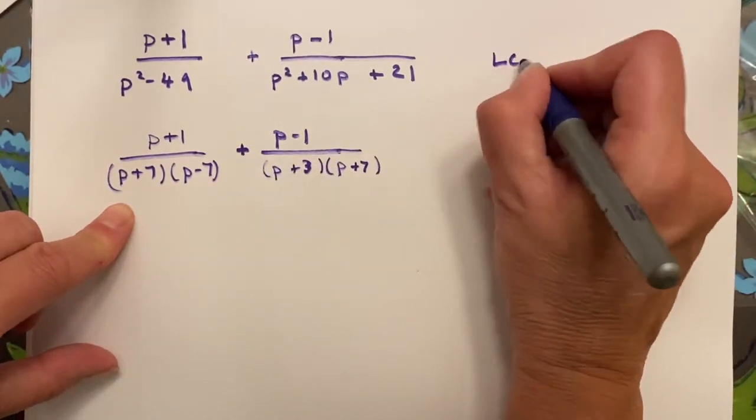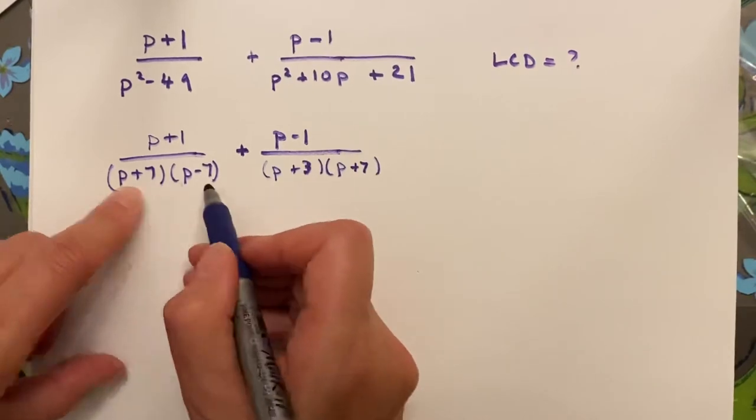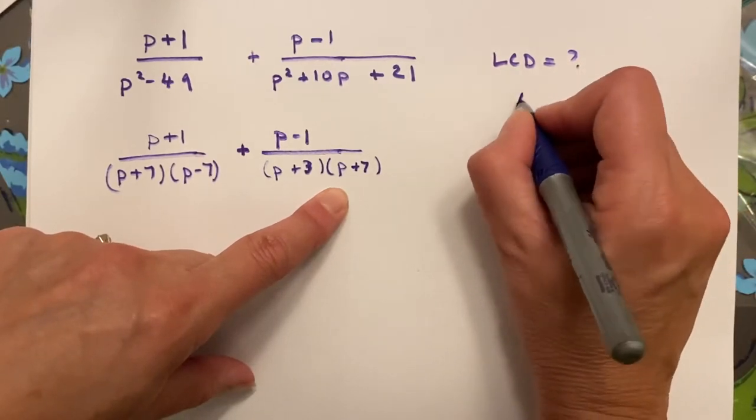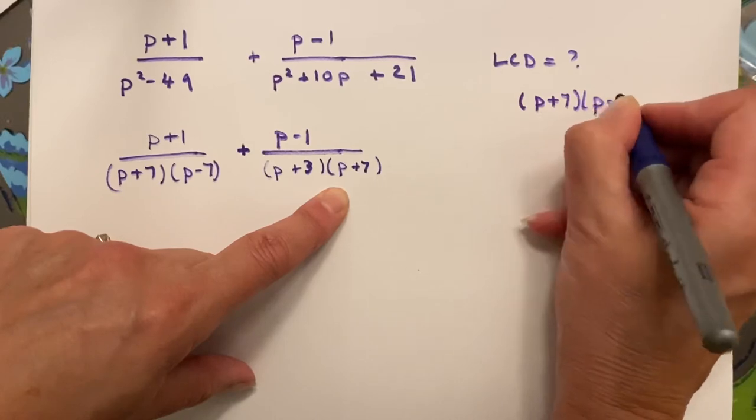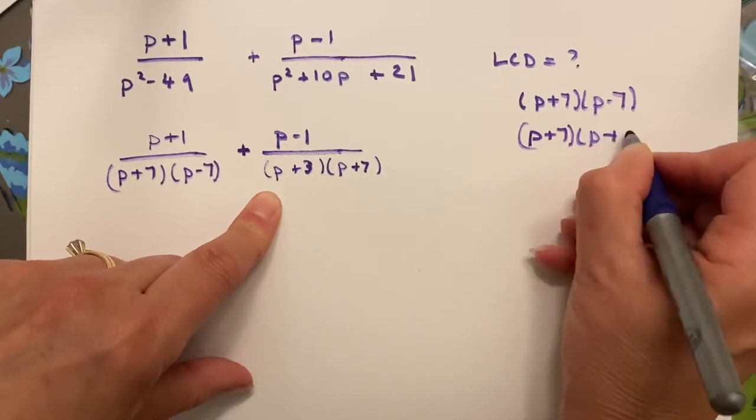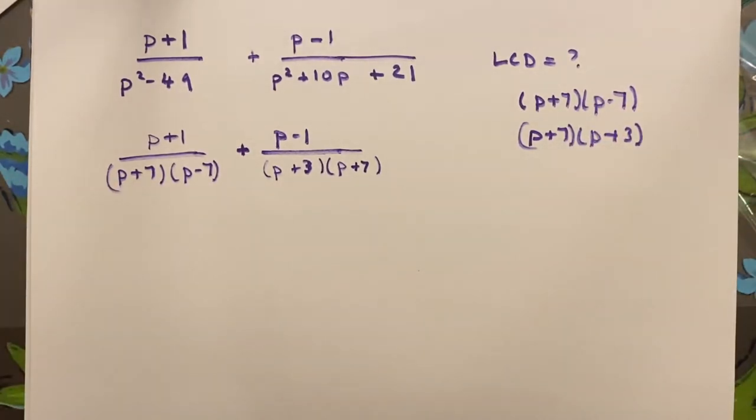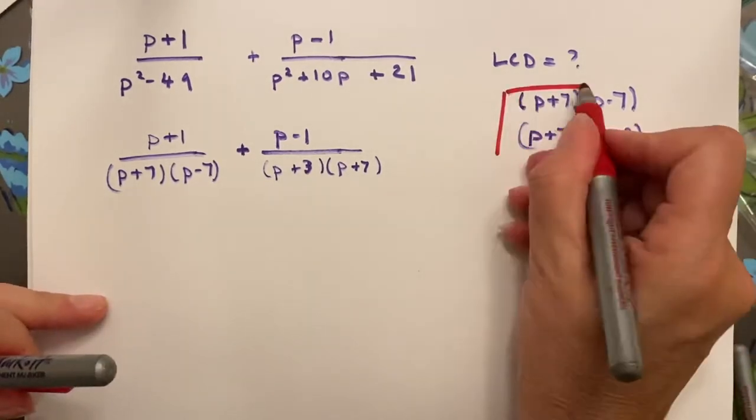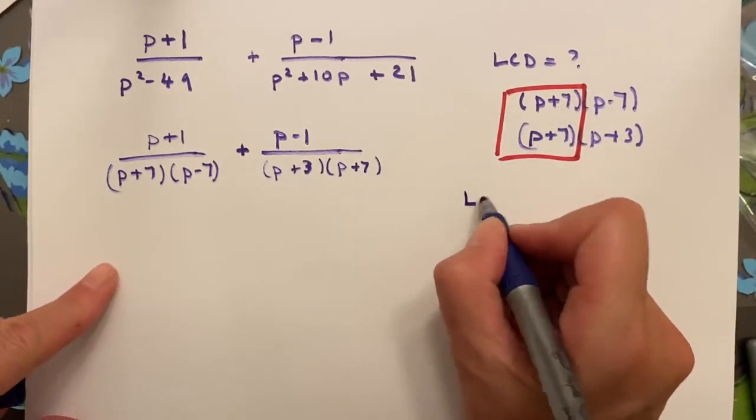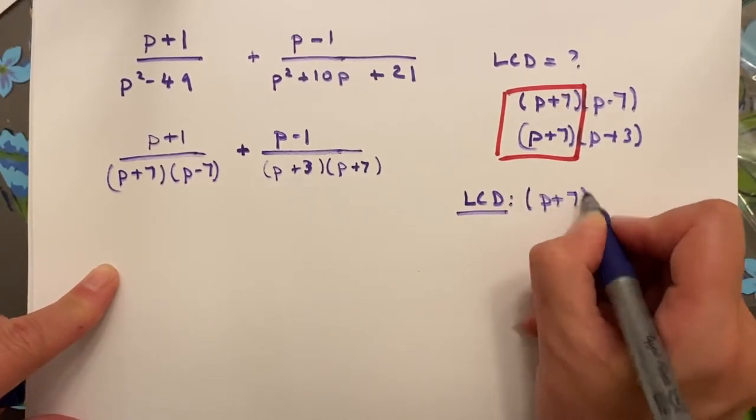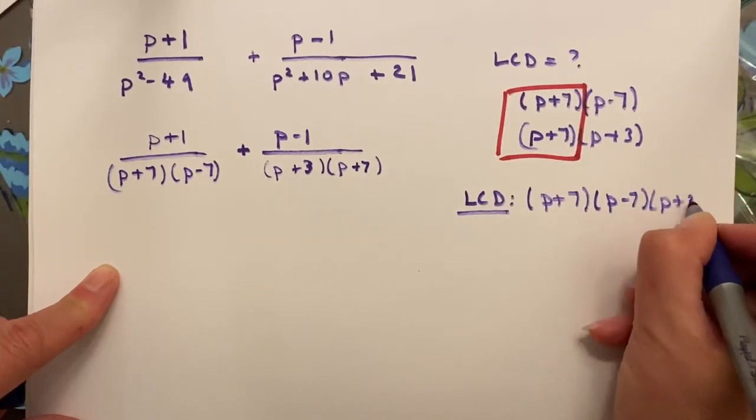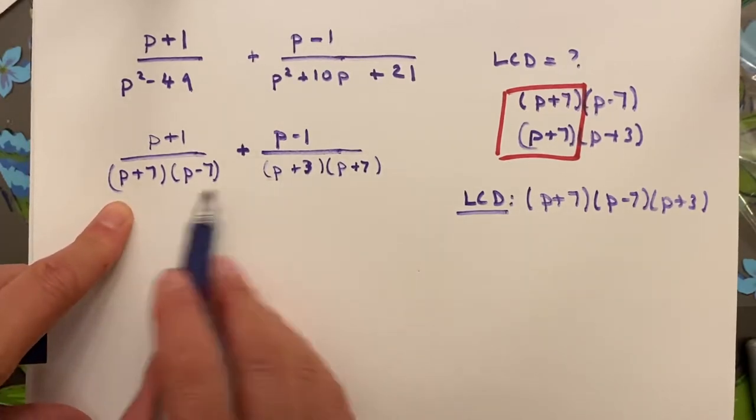So my LCD. What is my LCD? Here I have p plus 7, p minus 7. Here I have p plus 3, p plus 7. So my first is p plus 7, p minus 7. And my second is p plus 7, p plus 3. Well, it's the same thing on the LCD. Which do they have in common? They have this in common. So I take what they have in common, p plus 7, and I add what's left over, which is p minus 7, p plus 3. So this is what I need in each of the denominators.